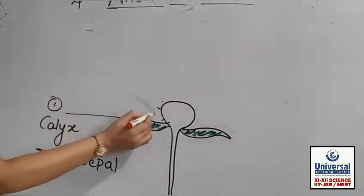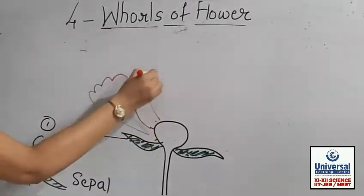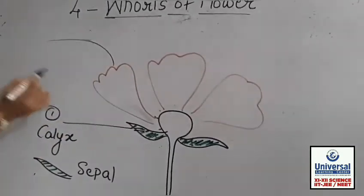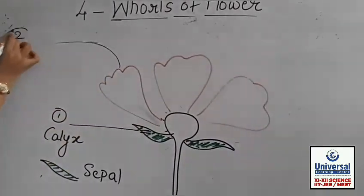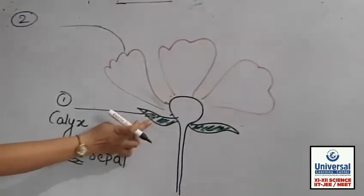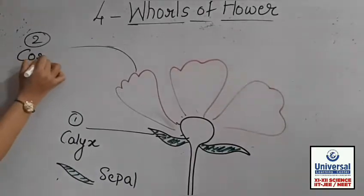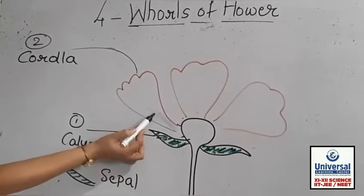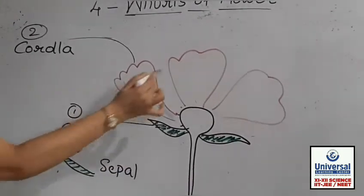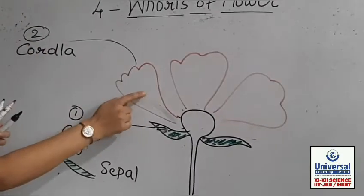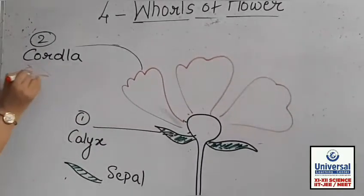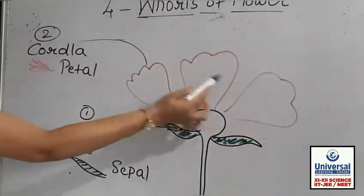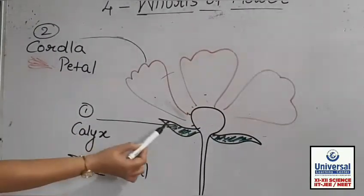The second wall, inside the calyx, is brightly colored. This second wall is called corolla. The difference between calyx and corolla: calyx is generally green in color, and corolla is brightly colored. The whole layer is corolla, but a single structure from it is called a petal. So corolla is made up of many petals, and calyx is made up of many sepals.